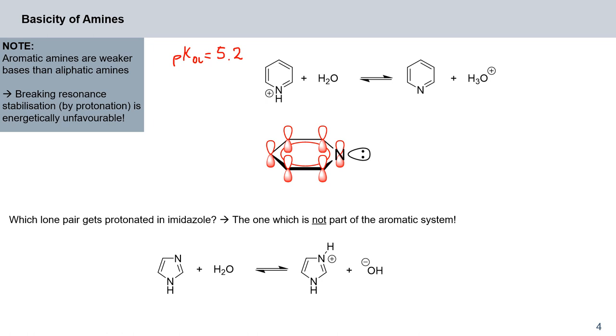Think about the potential to break resonance stabilization by protonation. In the case of pyridine, we have effectively an sp2 hybridized nitrogen. The nitrogen lone pair is in a 90 degree angle to the aromatic molecular orbitals, so it does not contribute to the overall aromaticity of this heterocycle. We are not breaking any resonance by protonation.